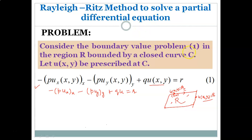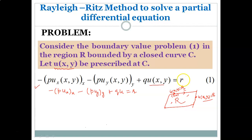Consider boundary value problem (1): in the region R bounded by a closed curve C, let u(x,y) be prescribed at C — that means fixed values of the function are given at the boundary C. The equation is: d/dx(p · u_x) minus d/dy(p · u_y) plus q·u equals r, where p is the coefficient, q is any function of x and y, and r is also any function.